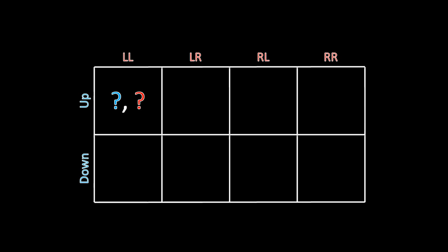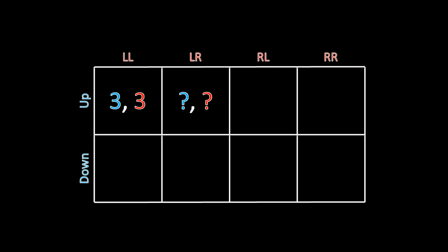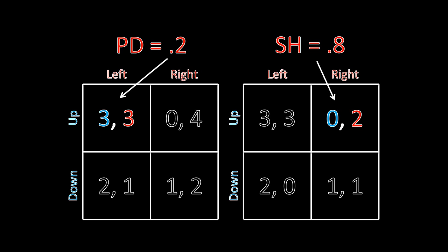Let's fill out this payoff matrix, starting with up-left-left. Going back to the matrices from before, if player two is choosing left regardless of her type, then both players receive a payoff of three. So that's easy to fill in. Other ones aren't going to be so simple. For example, let's look at up-left-right. 20% of the time they'll end up in the up-left section of the left matrix, and 80% of the time they'll be in the up-right section of the right matrix. So player one's expected payoff is 0.2 times three plus 0.8 times zero, which works out to 0.6. Player two's payoff is three times 0.2 plus two times 0.8 — that's 0.6 plus 1.6, or 2.2.